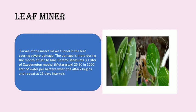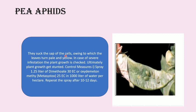Pea aphids suck the sap from cells, causing the leaves to turn pale and yellow. In case of severe infestation the plant growth is checked and ultimately stunted. Control measures include spraying 1.25 liters of dimethoate 30 EC or oxydemeton-methyl 25 EC in 1000 liters of water per hectare, and repeat the spray after 10 to 12 days.